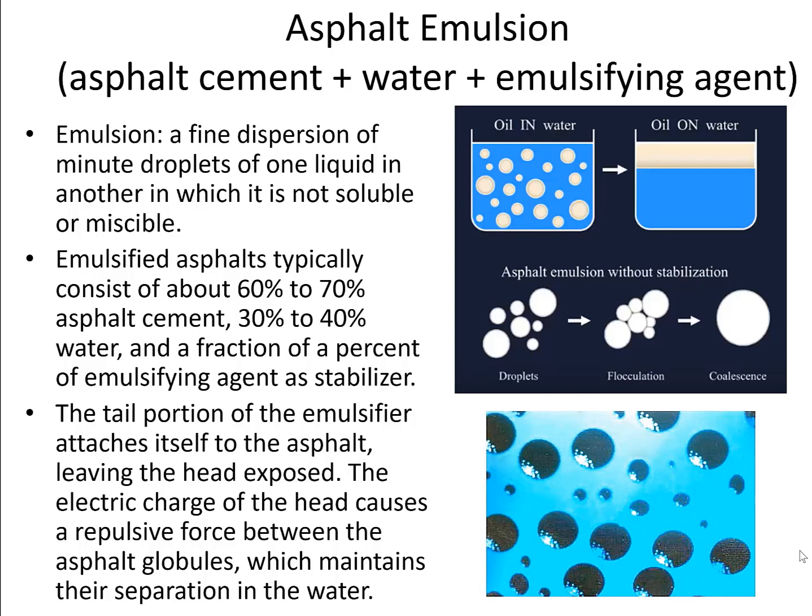Emulsions can actually be found in your home, including milk, butter, and car wax. In addition to water and asphalt, there is another component in the asphalt emulsion. It is called an emulsifier.